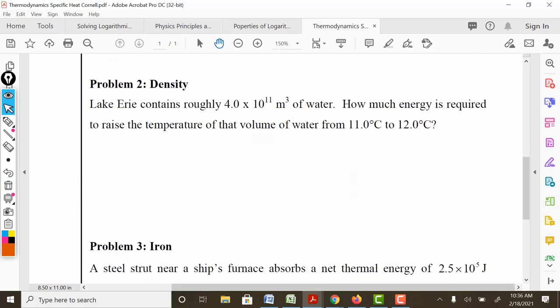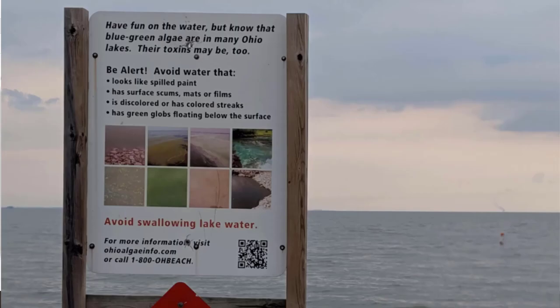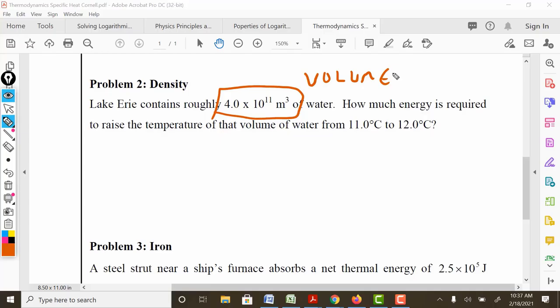Problem two. Well, notice that this is an interesting number they gave us for Lake Erie. This is how much water it contains. This is volume of water. Recall from back in the day, first set of notes, that if it's one dimensional, it's a line. If it's two dimensional, it's area. If it's three dimensional, it's volume. So this is a three dimensional unit. This is volume of water.